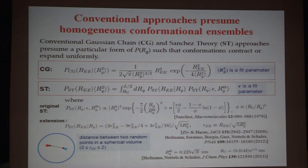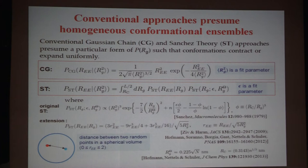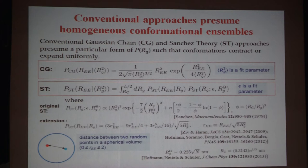The other method looks slightly more sophisticated but turns out to give more or less the same answer: it uses the Sanchez theory, basically based on a Flory-Huggins and a Flory empirical formula for the radius of gyration. On top of it, you have a term that gets you from the distribution of radius of gyration to a distribution of end-to-end distance, based on assuming you can approximate that function by the distance between two random points in a sphere. There's an epsilon parameter — the attractive inter-chain energy — so you measure R_ee, fit the epsilon, and then get R_G out of this.